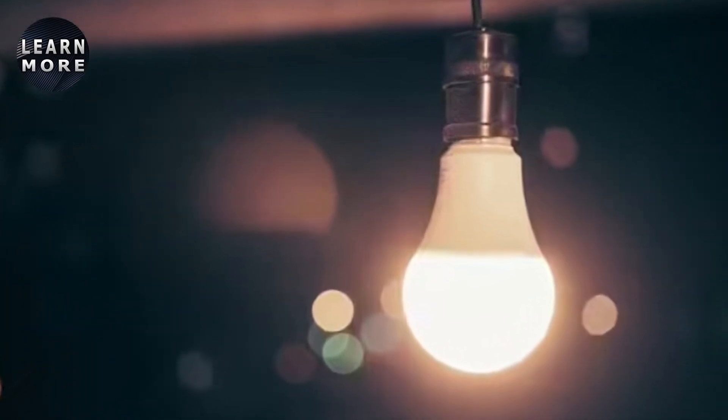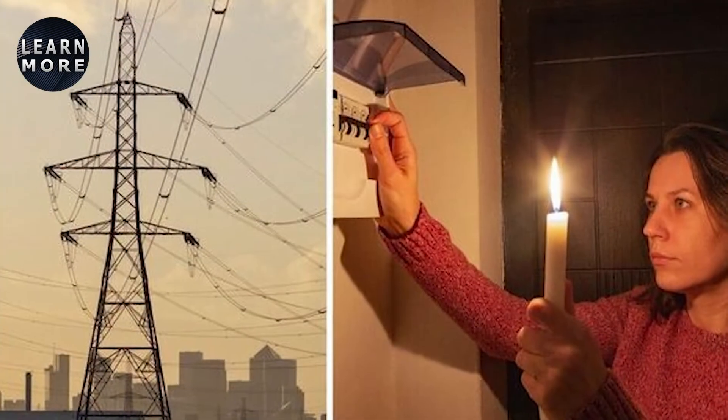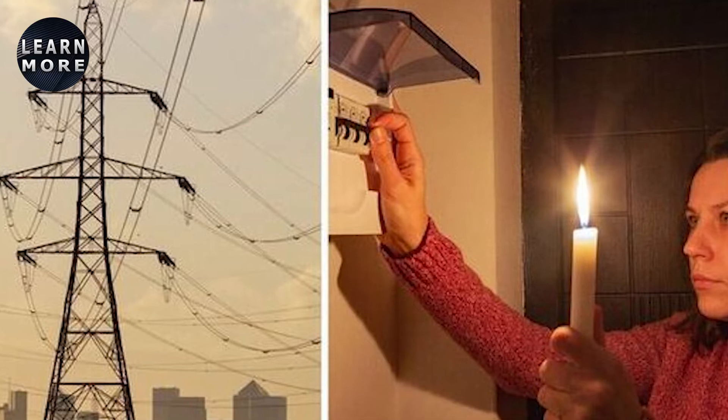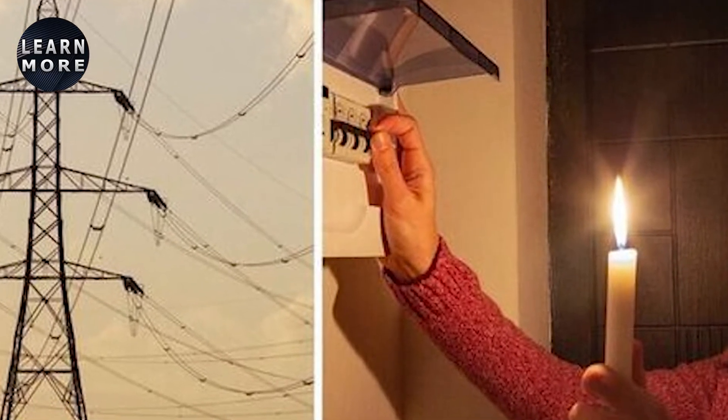The Demand Flexibility Service will be made available to as many willing participants as possible, with households needing to be able to lower their usage for at least 30 minutes and be in a position to be metered every half hour, i.e., have a smart meter.